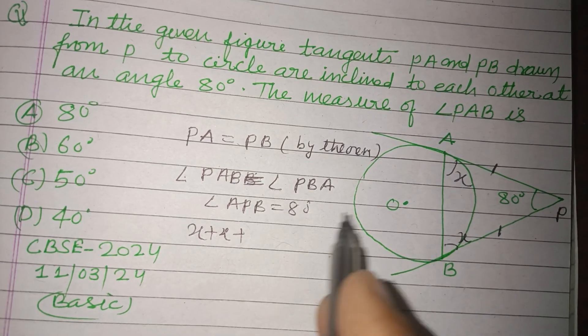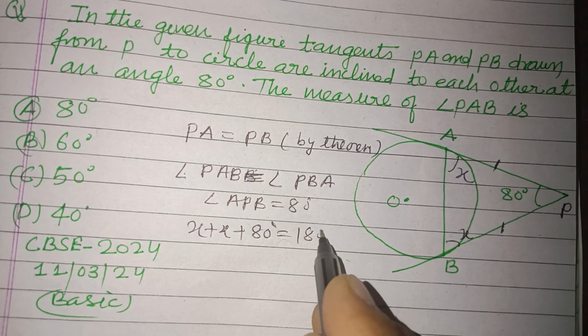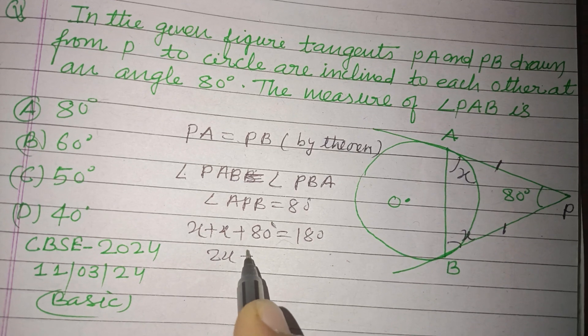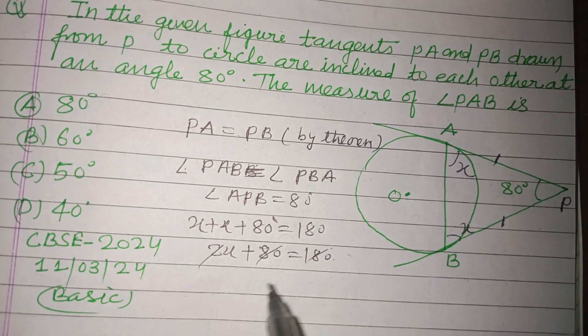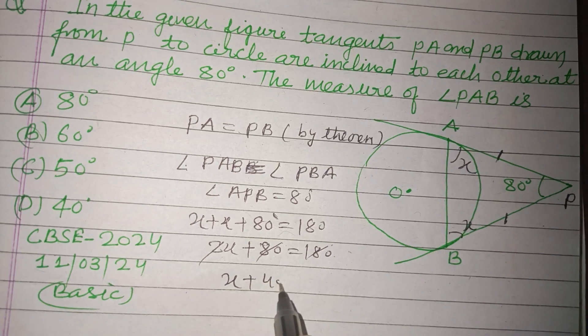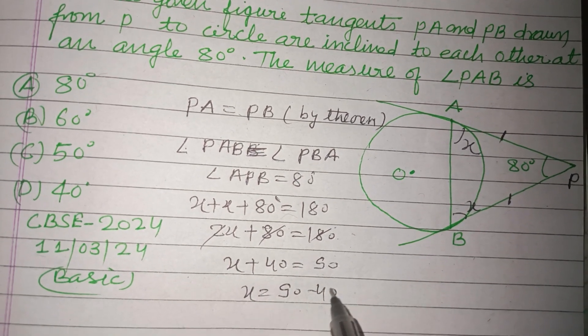X using angle sum property. X plus X plus 80 equals 180. So 2X plus 80 equals 180. 2X equals 100. X equal to 50. Therefore X equals 90 minus 40, that is